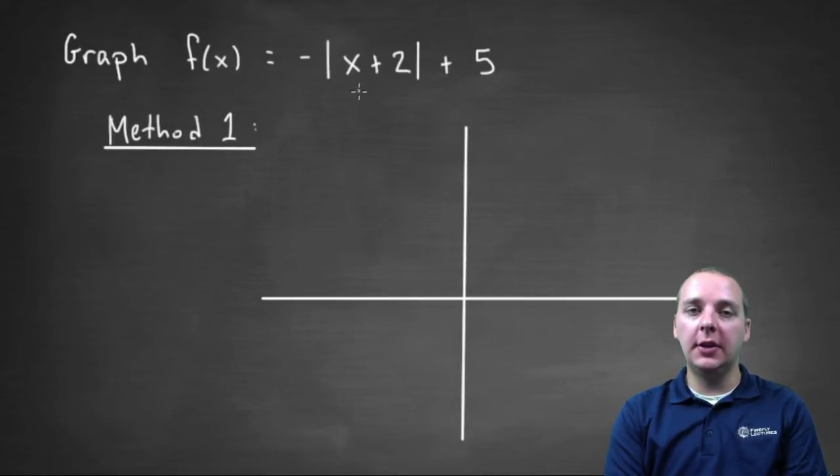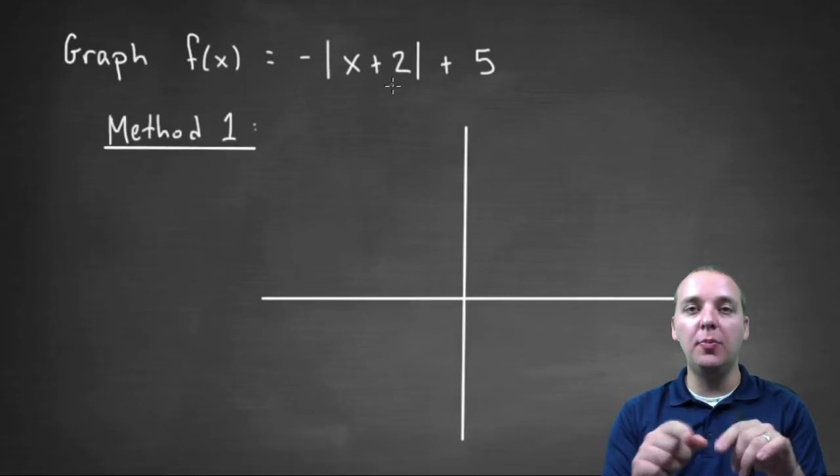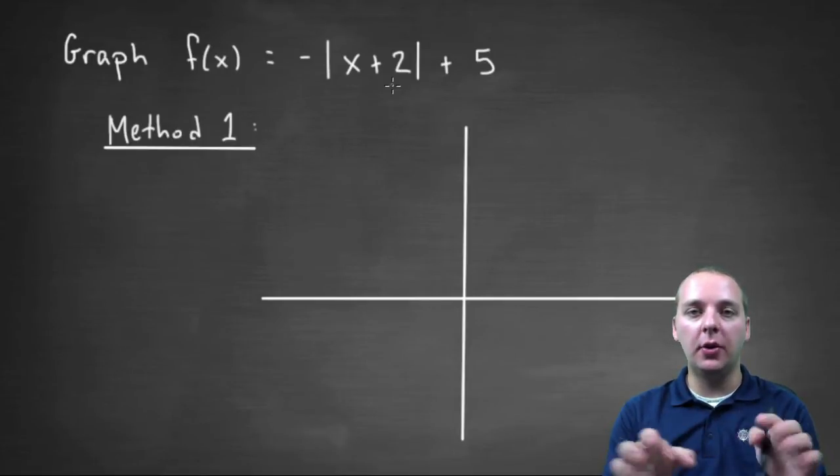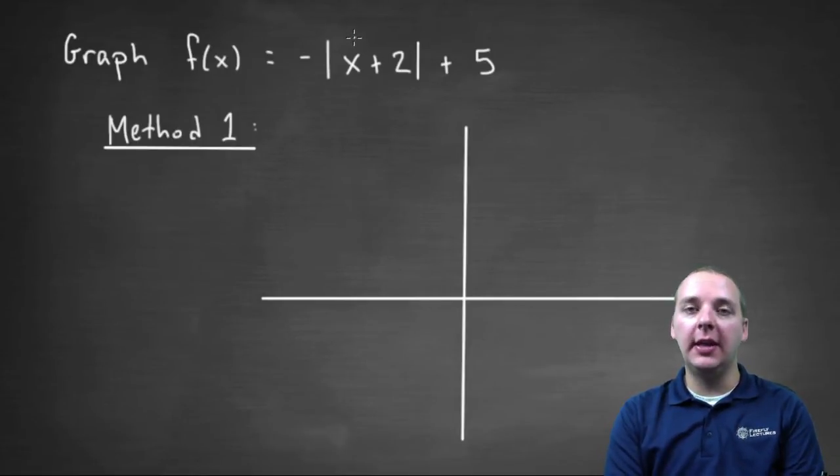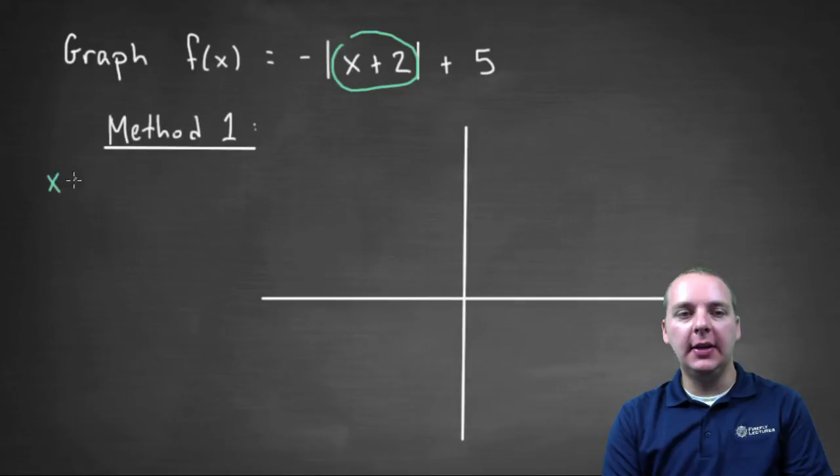Alright so the first thing we're going to do using this method, if you remember, is we're going to try to find the x coordinate of the vertex, and then we'll make a little mini x y table around the vertex. So the way you find the x coordinate of the vertex is you take what's inside the absolute value and you set it equal to zero.